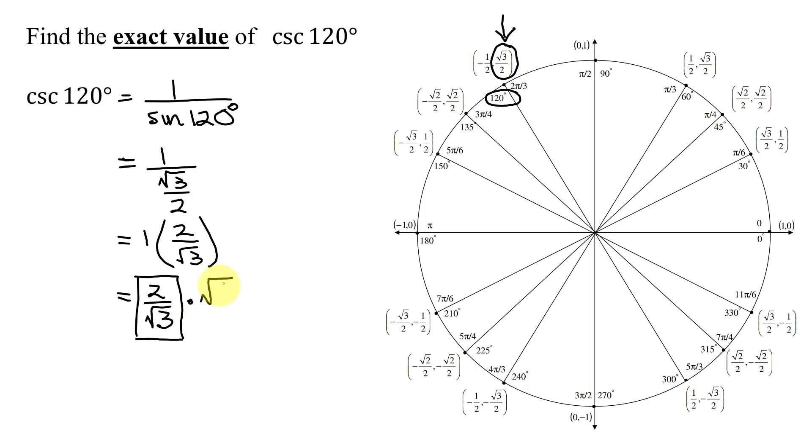But if you do have to rationalize the denominator, you just multiply numerator and denominator by the square root of 3. So you get 2 times the square root of 3 divided by the square root of 3 times the square root of 3 is the square root of 9, which is 3. So the other way of writing the exact value of the cosecant of 120 degrees is 2 times the square root of 3 divided by 3. That's it.